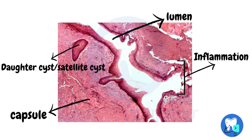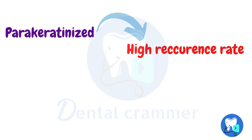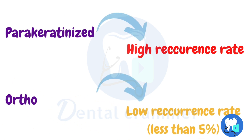OKC is a developmental cyst; however, if inflamed, it might result in disruption of the epithelial lining as shown in the picture. OKC has two histopathological variants: parakeratinized, which has a high recurrence rate, and orthokeratinized, which has a low recurrence rate of less than 5%.